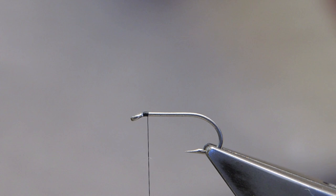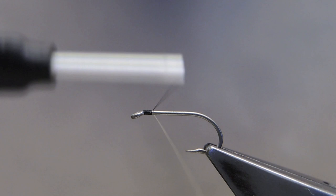Ribbing material is fine silver wire which I tie in underneath and I'll keep it there.